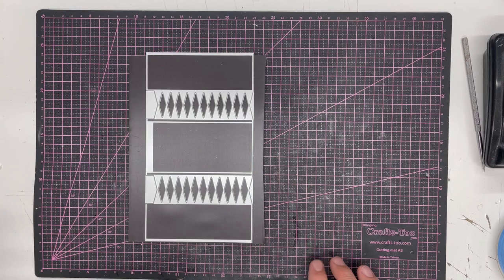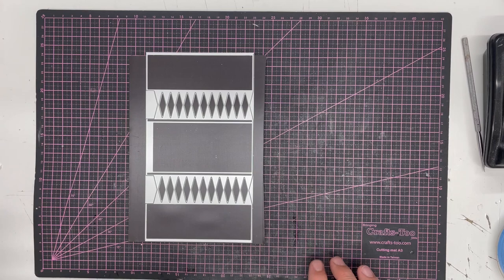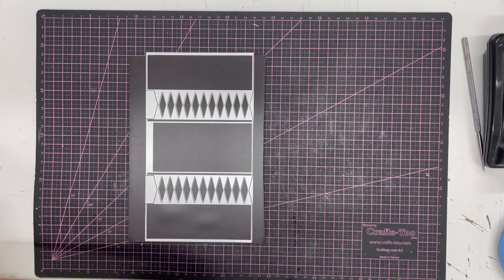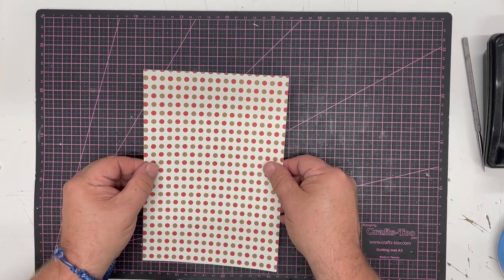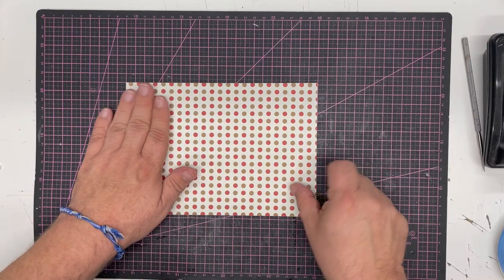So I want to show you how to use it. Here I've got a piece of paper, this is 190 GSM from the new Christmas paper pad. What you need to do with this is the die has been designed so that it has no cut line at the edges.